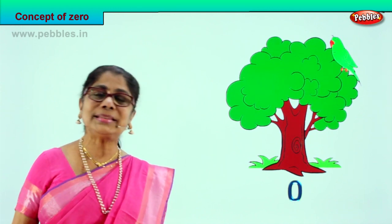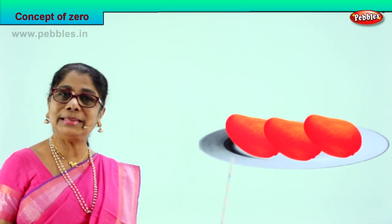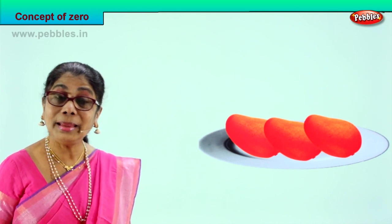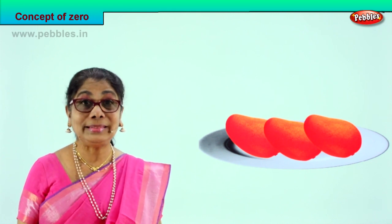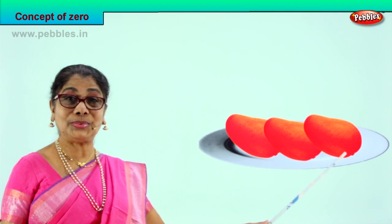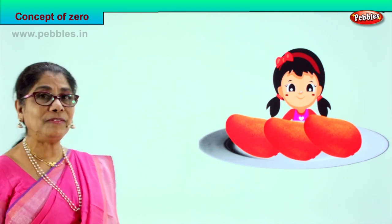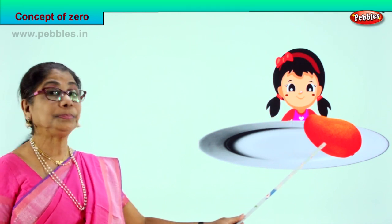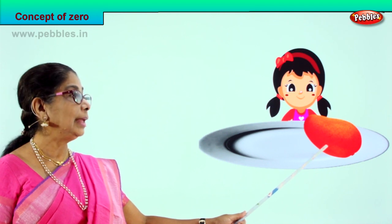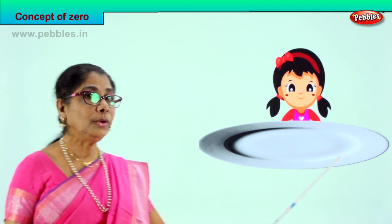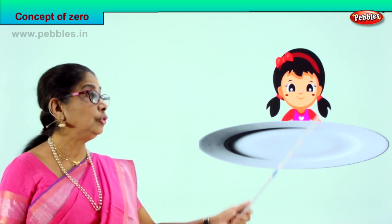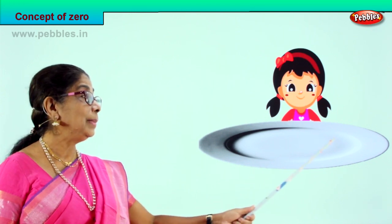Shall we take another picture to understand better the concept of zero? Look — there is a lovely little tray with how many mangoes? One, two, three. You have a tray with three juicy mangoes. A little girl comes in and says mmm yummy, and she starts eating up. She says it's lovely — may I eat one? She ate one, then one more, and then she ate the third one also.